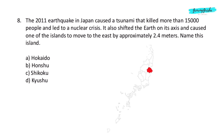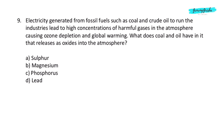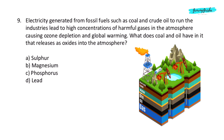Question 8. The 2011 earthquake in Japan caused a tsunami that killed more than 15,000 people and led to a nuclear crisis. It also shifted the Earth on its axis and caused one of the islands to move to the east by approximately 2.4 meters. Name this island. Option B: Honshu.